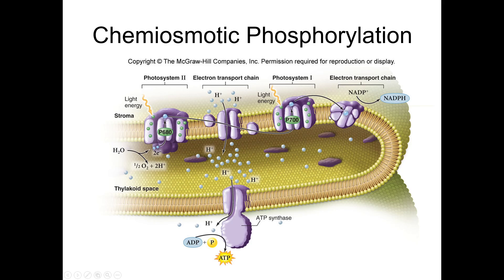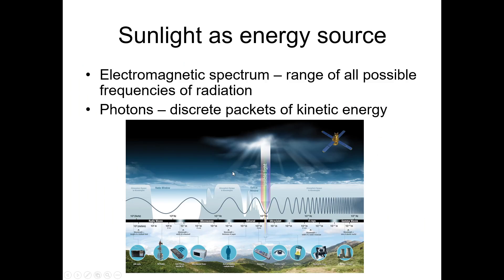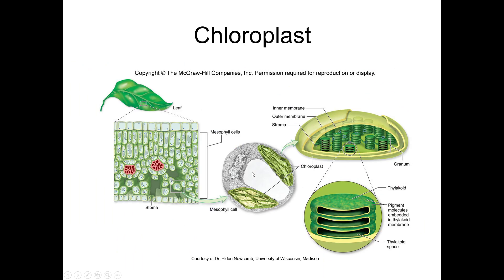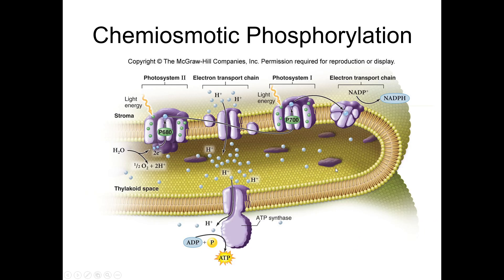Sometimes I refer to the light reactions as the thylakoid reactions, and sometimes I refer to the Calvin cycle reactions as the stroma reactions. Why? Well, like in the beginning, we talked about some of the parts of the chloroplast. The thylakoids are where the light reactions take place, and the stroma is the fluid that the Calvin cycle takes place in. So I use those interchangeably at times, so just keep an eye out for that.